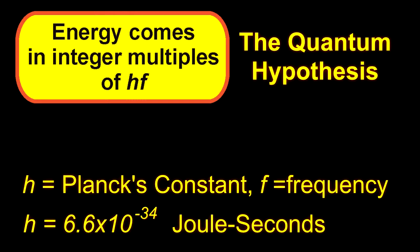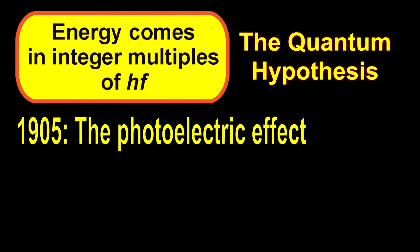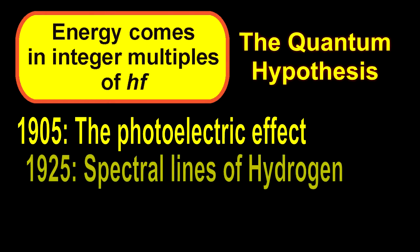Working with the tip from black body radiation, physicists started finding many phenomena that could be explained. The first was the photoelectric effect in 1905, and then the spectral lines of hydrogen were explained in the 20s.